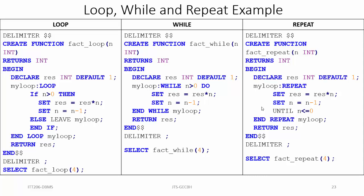In the case of loop, it doesn't have a termination statement, so we have to write an IF statement so that when the termination condition is reached we can terminate the loop. While is an entry control loop, similar to what we learned in C programming language, whereas repeat is an exit control loop.